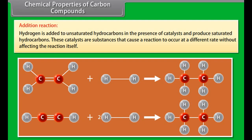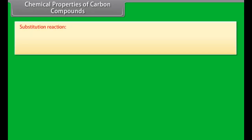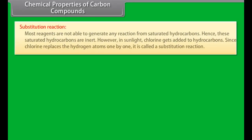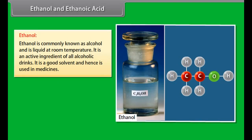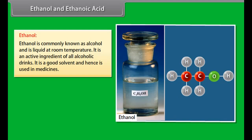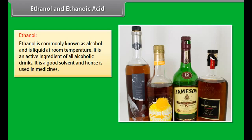IUPAC names: Carbon compounds now need to be named in a more systematic way. A committee called the International Union for Pure and Applied Chemistry, IUPAC, put forward a system of giving scientific names to carbon-based compounds. These names are followed all over the world and are called IUPAC names.